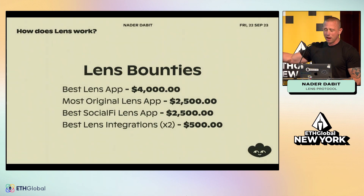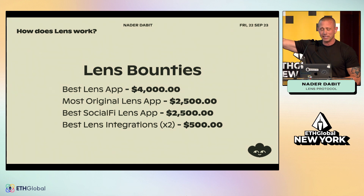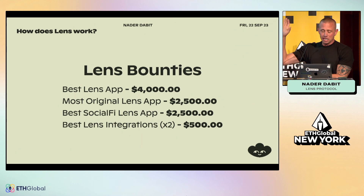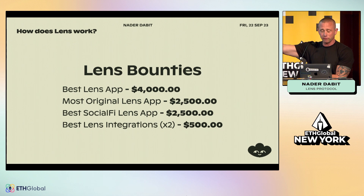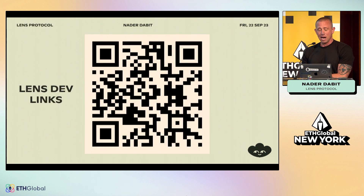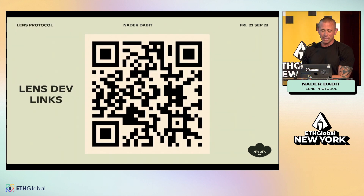To wrap up, we have $10,000 in Lens bounties: $4,000 for best Lens app, $2,500 for most original Lens app, $2,500 for best social Lens app, and $500 times two for best integrations. The Aave Foundation also has $10,000 in Go bounties. Check out the links and thank you for attending the workshop.